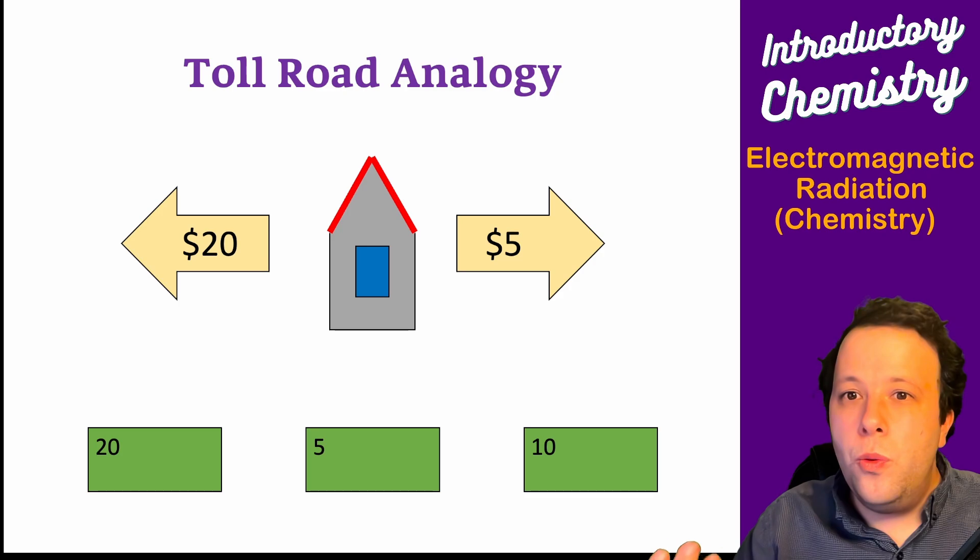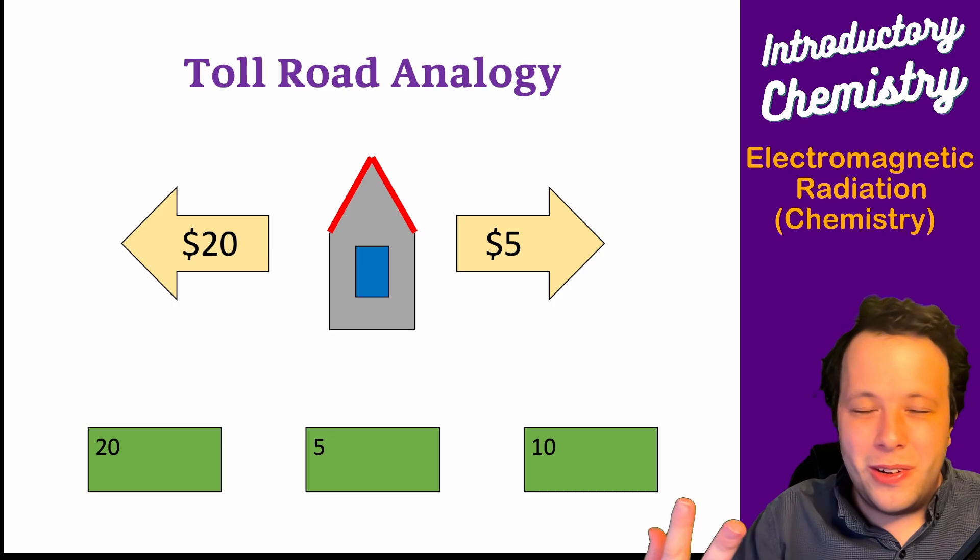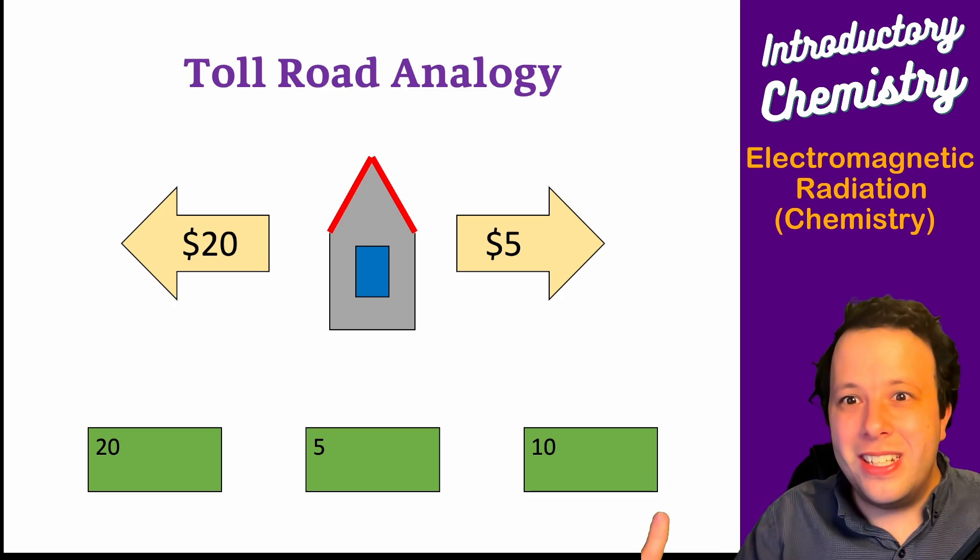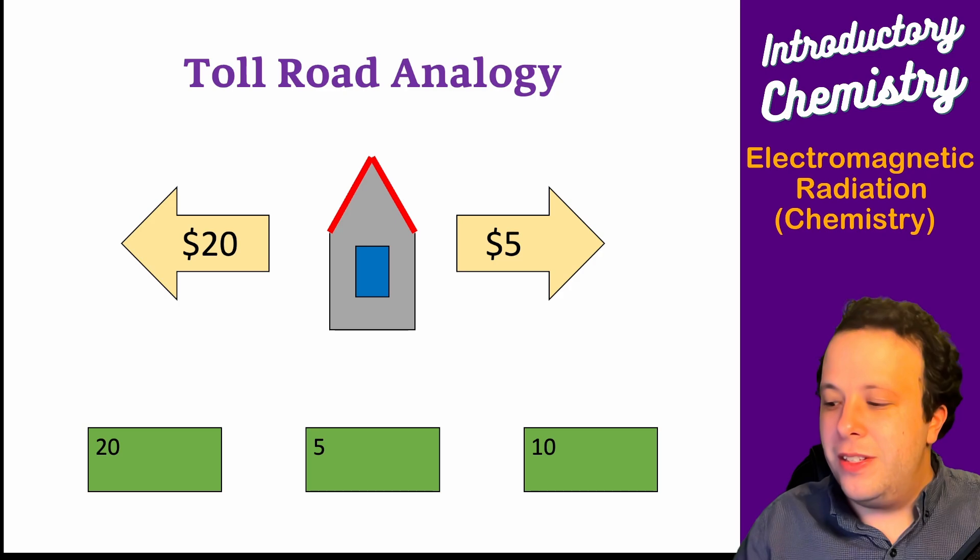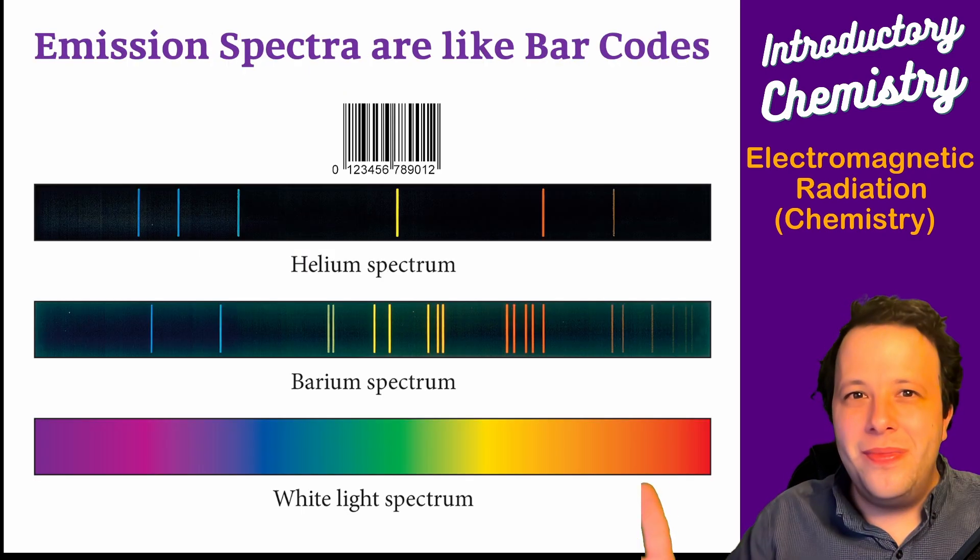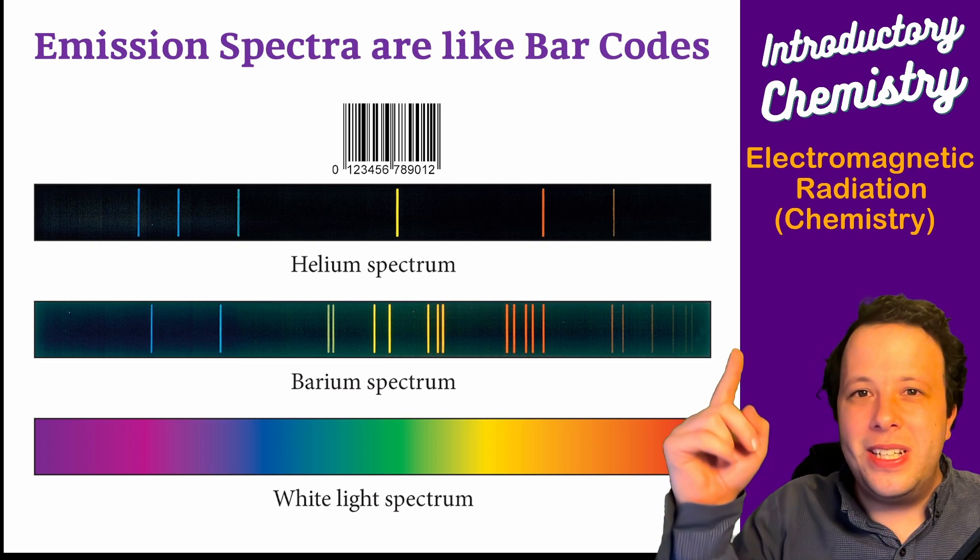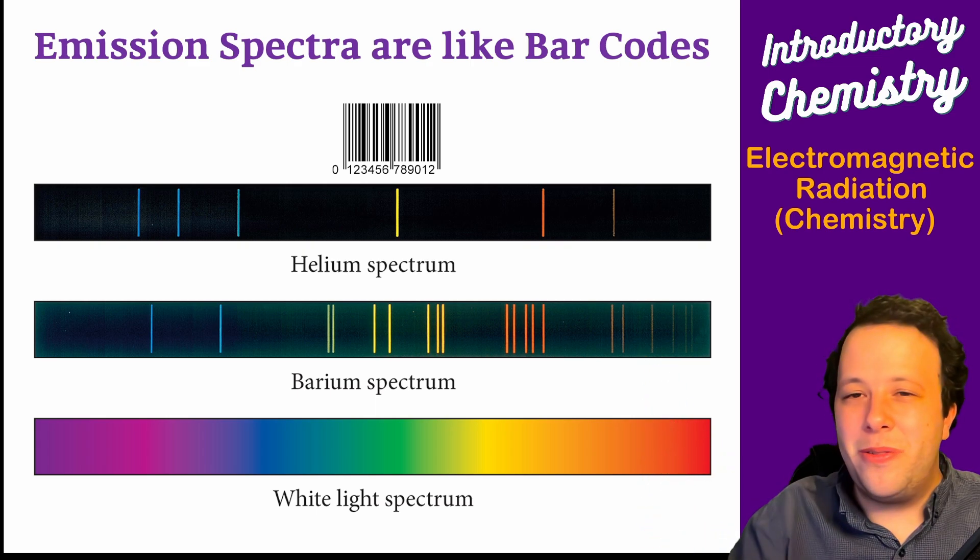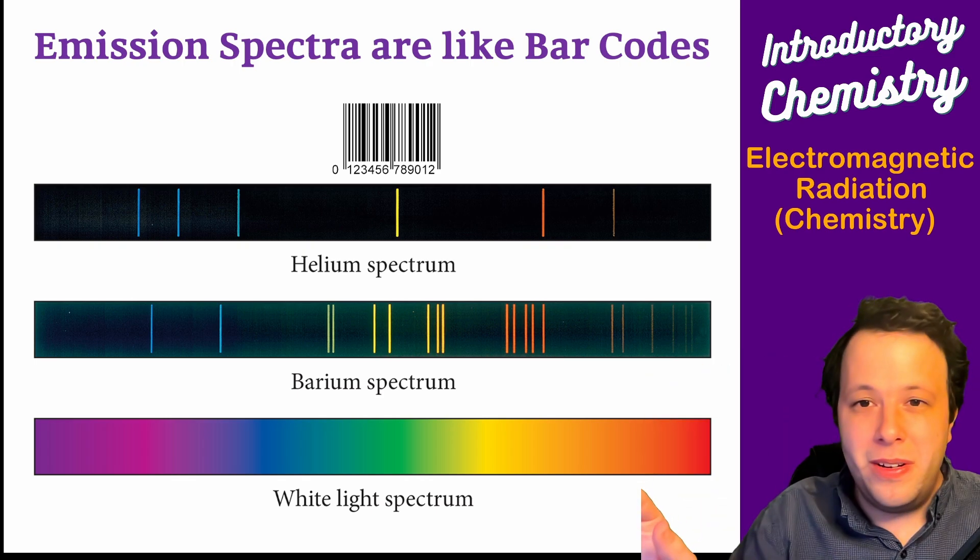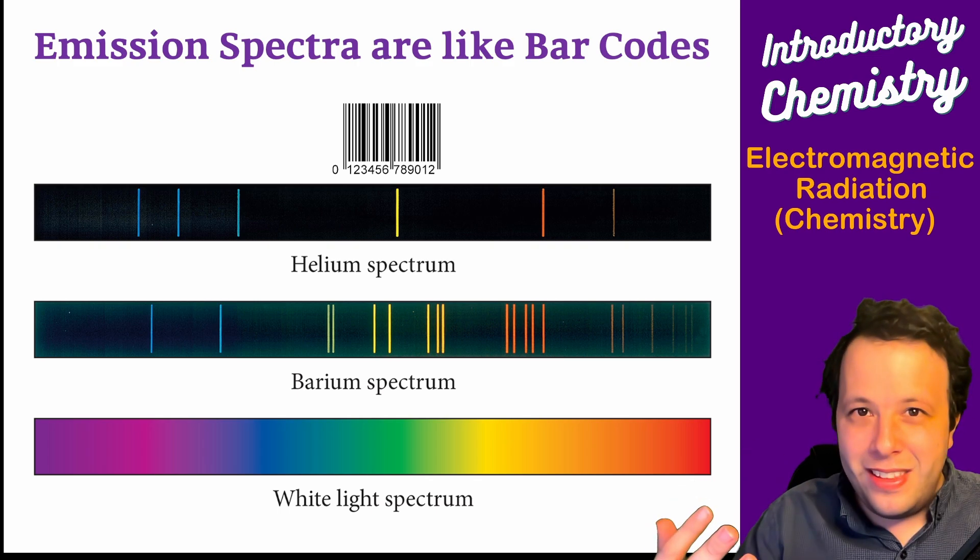If you want to go through the twenty dollar toll, what options do you have? You could give the twenty, two tens, four fives, two fives and a ten. You have options, meaning there could be multiple lines available to be seen in terms of the quantum side. When you have options, there are many different lines that are possible. Helium has a bunch of lines, barium has more lines, and white light has a spectrum of many lines because there are many elements.